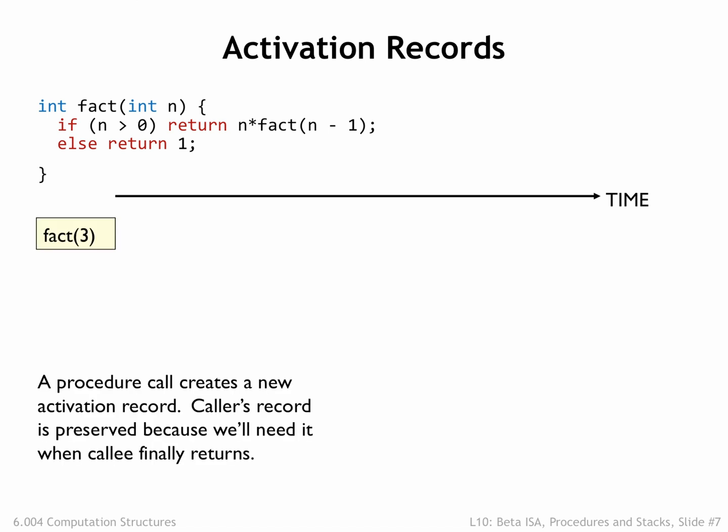The first activation record is for the call fact(3). It's created at the beginning of the procedure and holds, among other things, the value of the argument n and the return address where execution should resume after the fact(3) computation is complete. During the execution of fact(3), we need to make a recursive call to compute fact(2), so that procedure call also gets an activation record with the appropriate values for the argument and return address. Note that the original activation record is kept since it contains information needed to complete the computation of fact(3) after the call to fact(2) returns. So now we have two active procedure calls and hence two activation records.